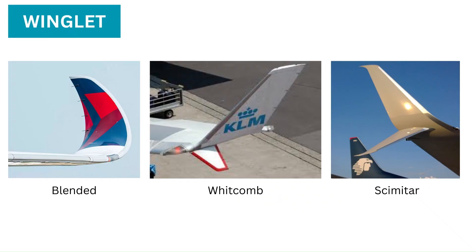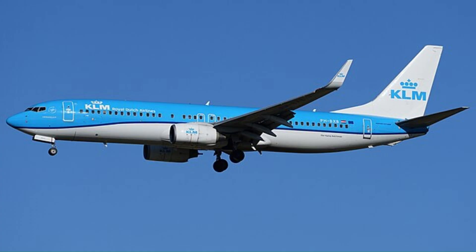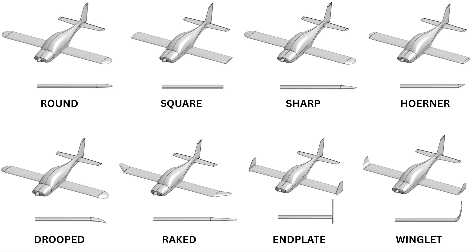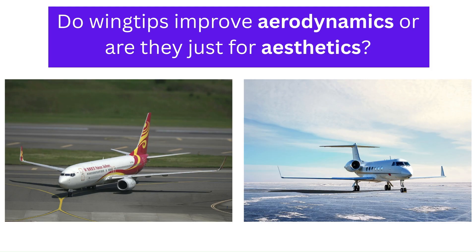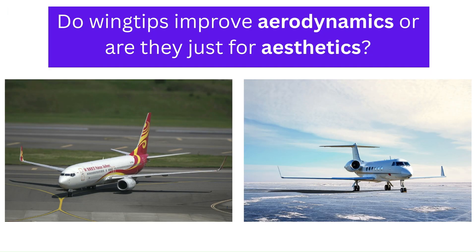Even within this type, there are different styles of winglets, like the Whitcomb winglet, split scimitar winglets, blended winglets, and so on. The blended winglet can be seen on many modern airliners, including the Boeing 737, Boeing 757, and many others. These were some of the most common types of wingtip devices. In conclusion, do wingtips have an important role to play when it comes to aerodynamics, or are they primarily another expression of aesthetics? The answer to both questions is yes — wingtips can offer fundamental improvements in efficiency, but they are sometimes also selected for appearance.